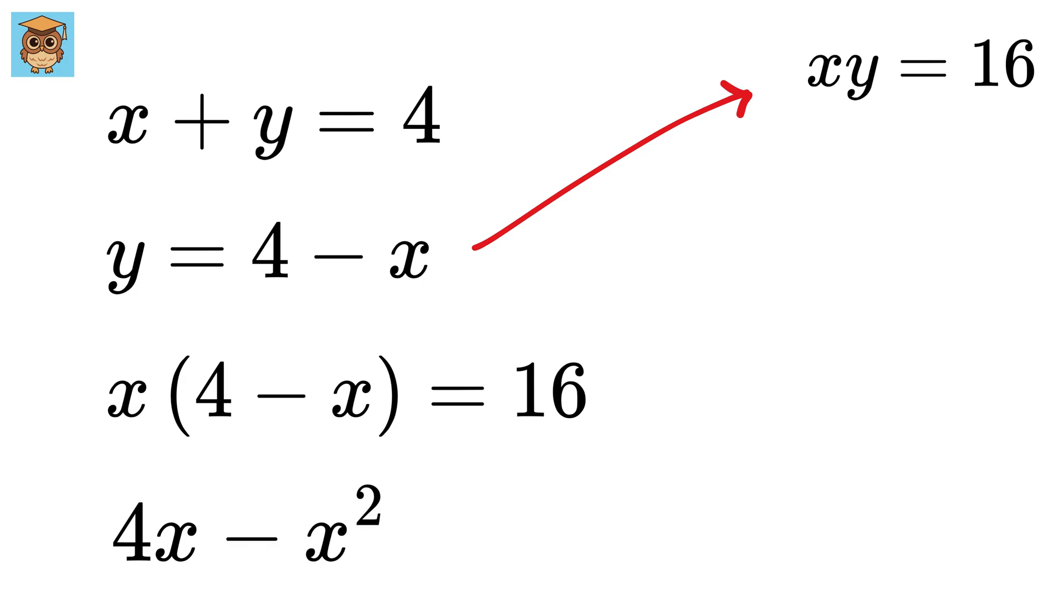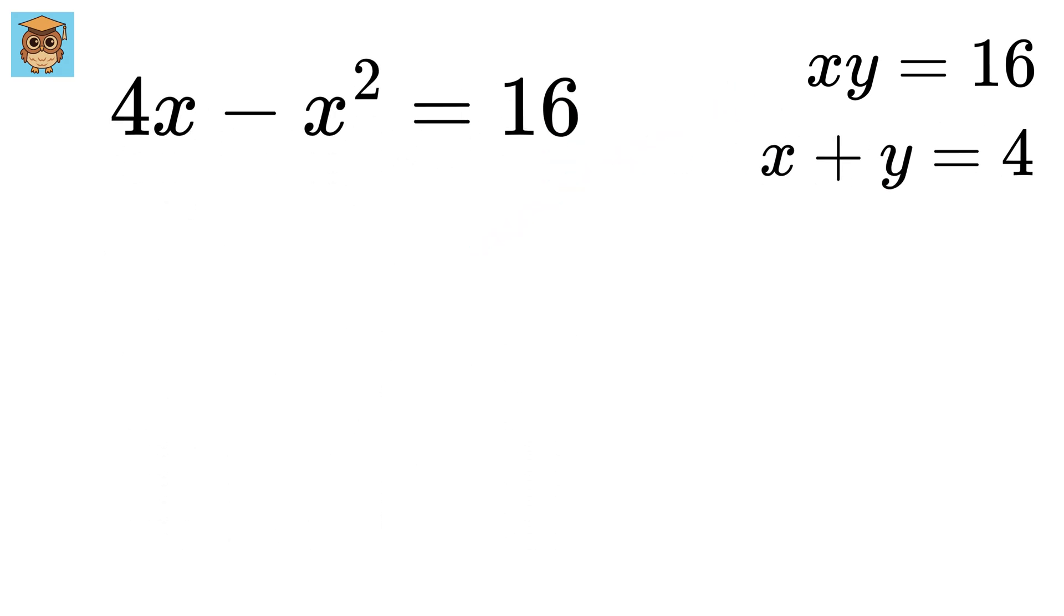This gives 4x minus x square equals 16, or rearrange them to get x square minus 4x plus 16 equals 0.